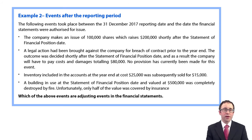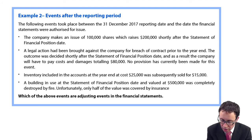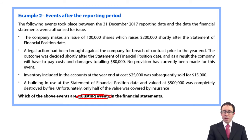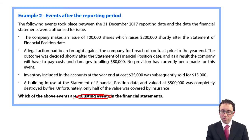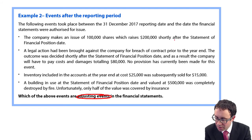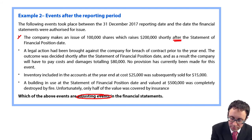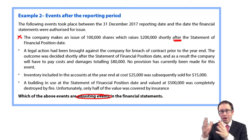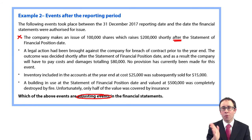The second scenario asks: which of the above events are adjusting within the financial statements? The following events took place between the December reporting date and the date they were authorised for issue. First: the company makes an issue of 100,000 shares raising $200,000 shortly after the statement of financial position date. Is that adjusting? No — we do not go back and adjust the share capital and share premium balance. The share issue didn't take place at the reporting date; the condition did not exist.